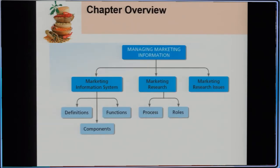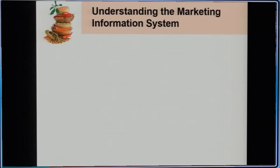This is the chapter overview. Managing marketing information is divided into three main elements in this book. We will look into marketing information system, marketing research, and marketing research issues.